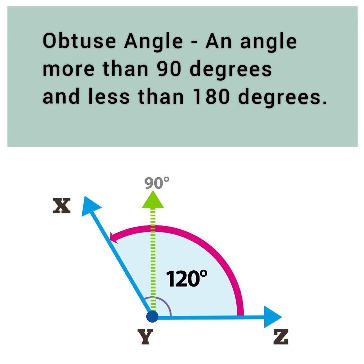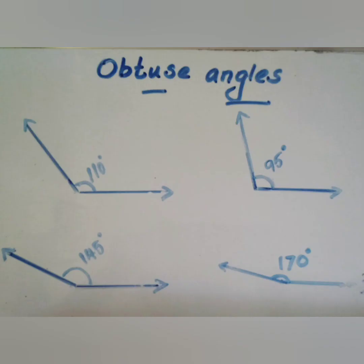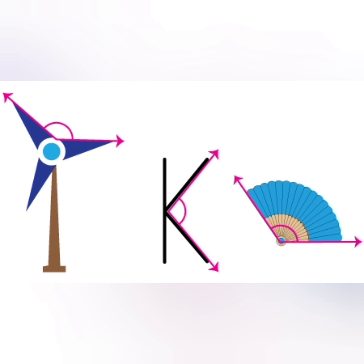An angle which is more than a right angle but less than a straight angle is called an obtuse angle. In other words, an angle which is more than 90 degrees and lesser than 180 degrees are called obtuse angle. These are few examples.